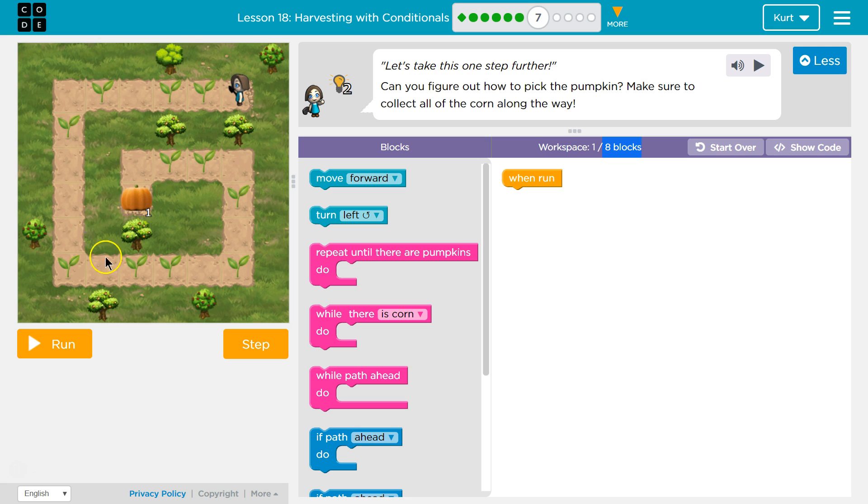This is like the last one. If we know there's no pumpkins on the course, I want to do something until we're at a pumpkin. So that would work.